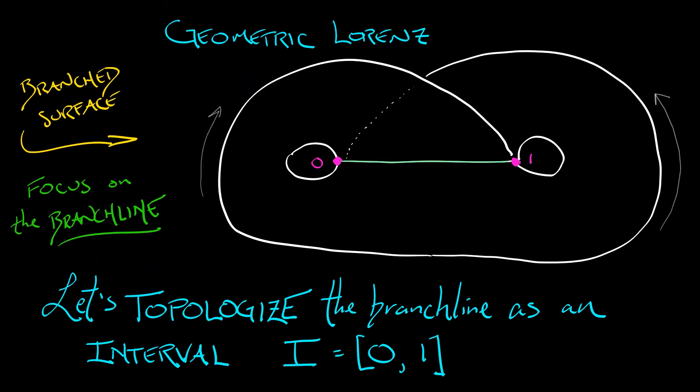Now, every other point in between, let's say one half, is given a corresponding number. We're topologizing all the points on this branch line so that they have numerical values. Now, why are we doing that?